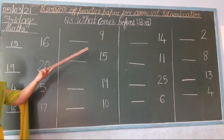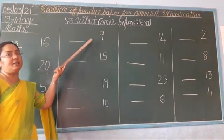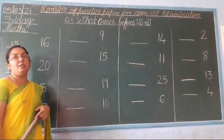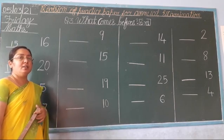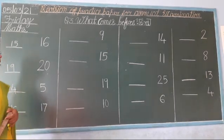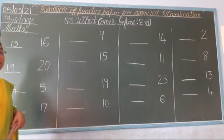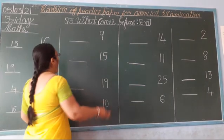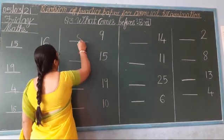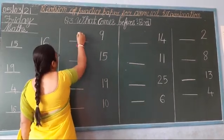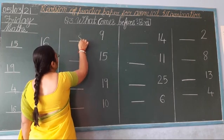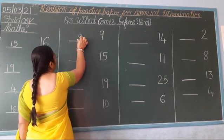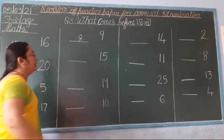Next, which number is this? 9. So: 1, 2, 3, 4, 5, 6, 7, 8, 9. Which number comes before? 8. Yes. Right here — number 8. Okay?